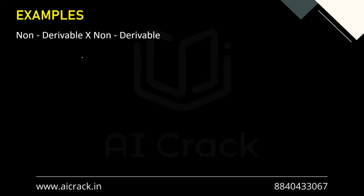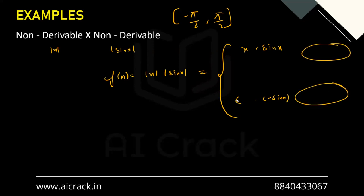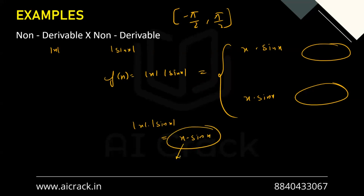For the last example — non-differentiable × non-differentiable — take |x|·|sin x| in (-π/2, π/2). Whether x is positive or negative, the two negatives cancel: (-x)·(-sin x) = x·sin x. So for any range, |x|·|sin x| = x·sin x. Since x and sin x are each individually differentiable, their product is also differentiable. We started with two non-differentiable functions but ended up with a differentiable product.